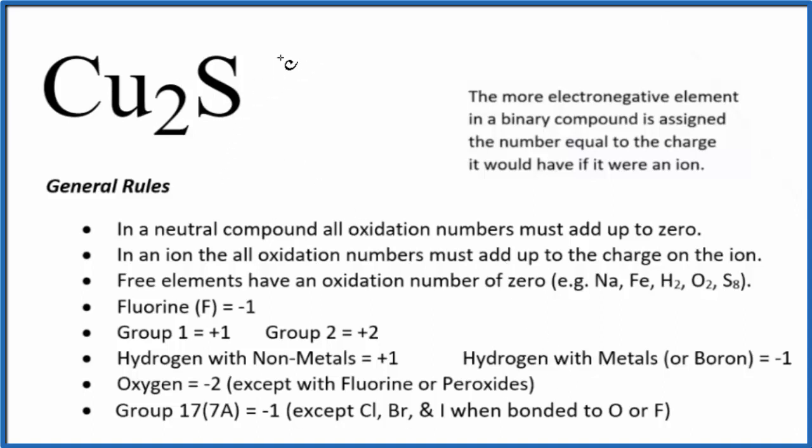The first thing we notice is there's no negative or positive sign after Cu2S. That means it's a neutral compound. All the oxidation numbers will add up to zero. We won't find copper or sulfur in our rules here. They can have different oxidation numbers depending on what they're bonded to.